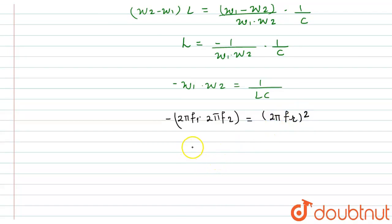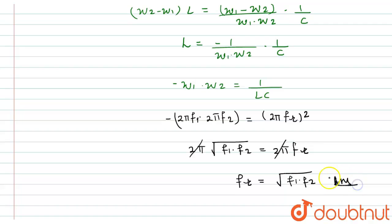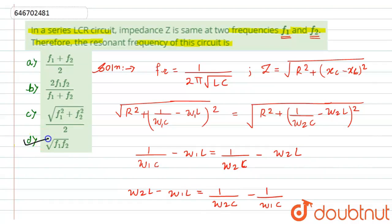The 2π cancels from both sides, and hence the resonant frequency fr = √(f1·f2). This is our final answer. According to the options, option D is the correct answer for this question.